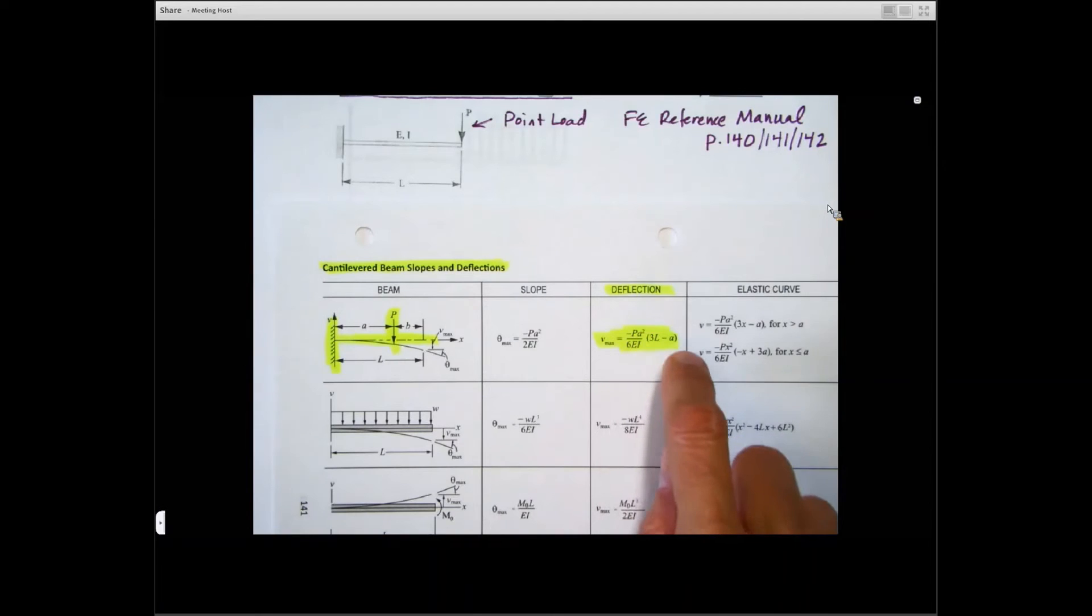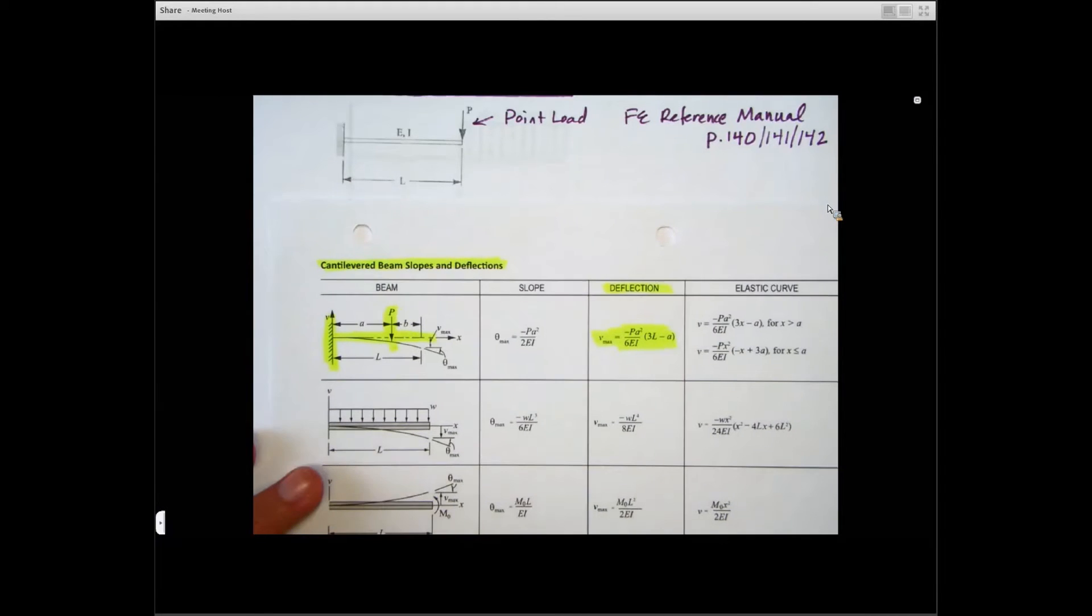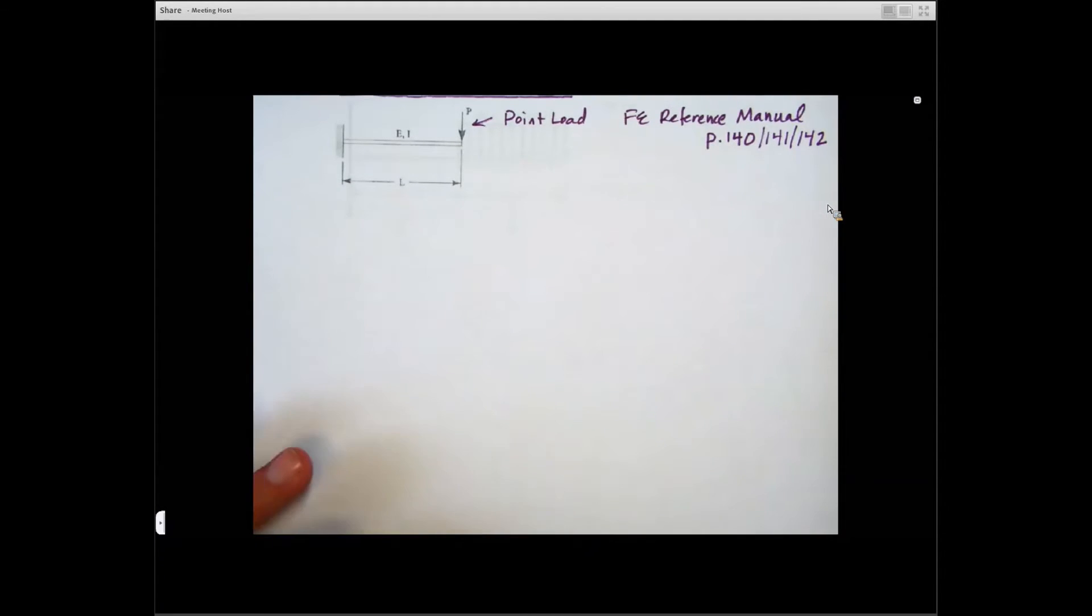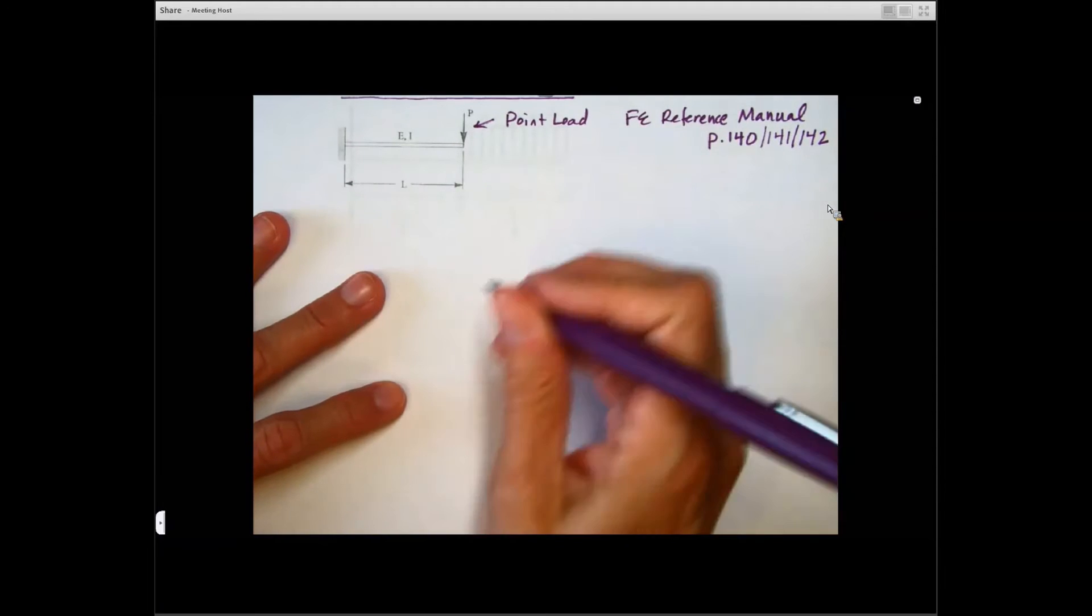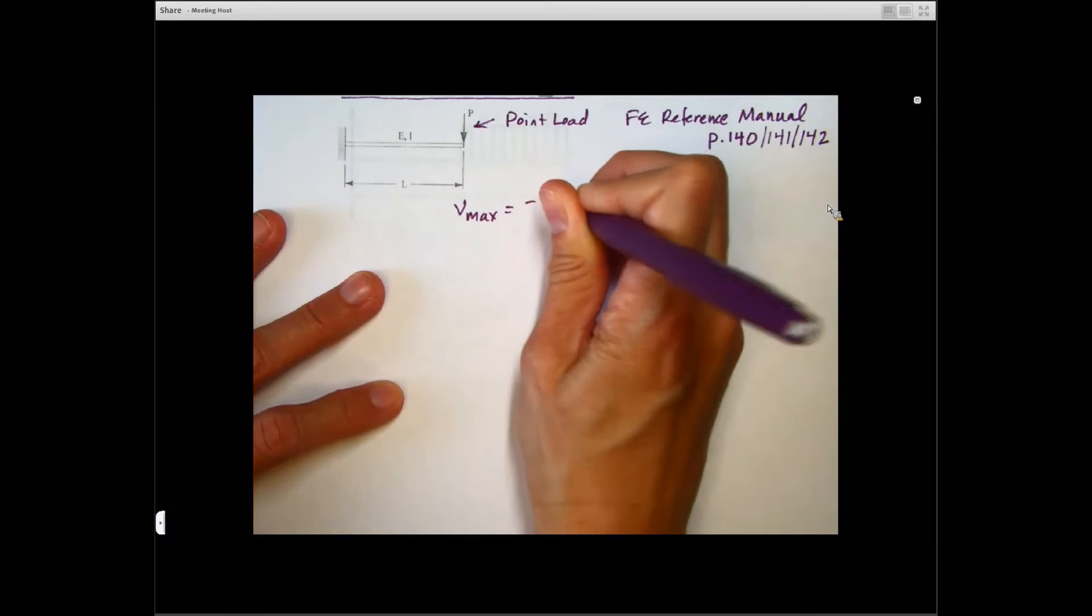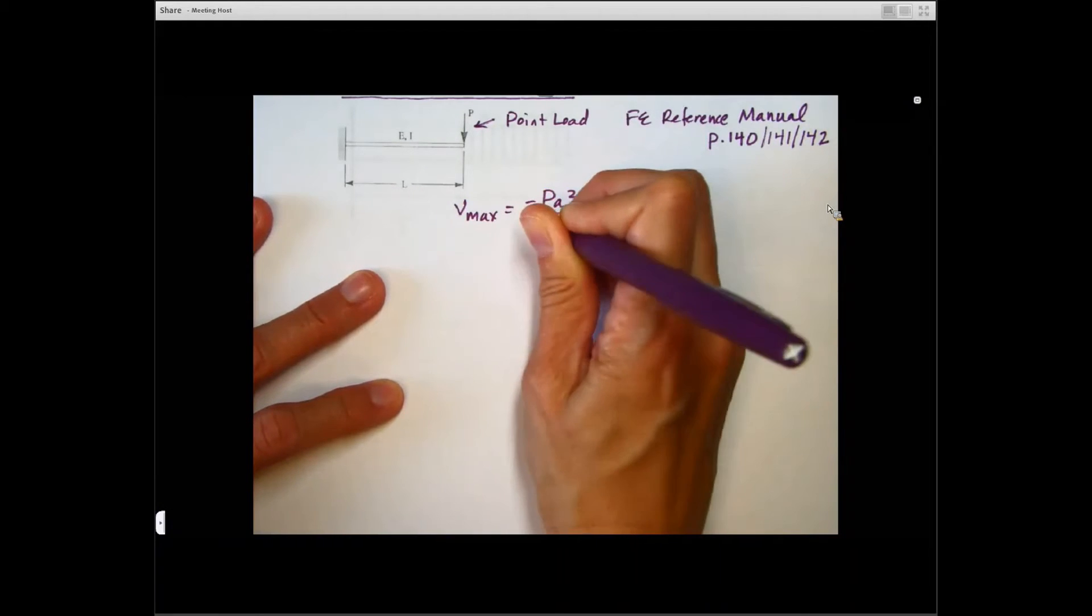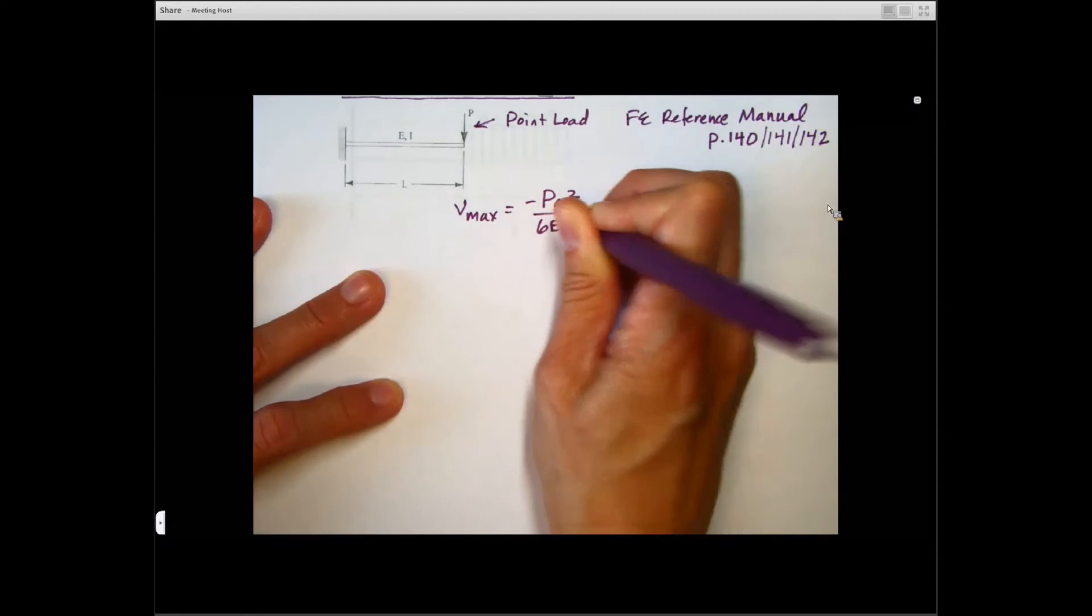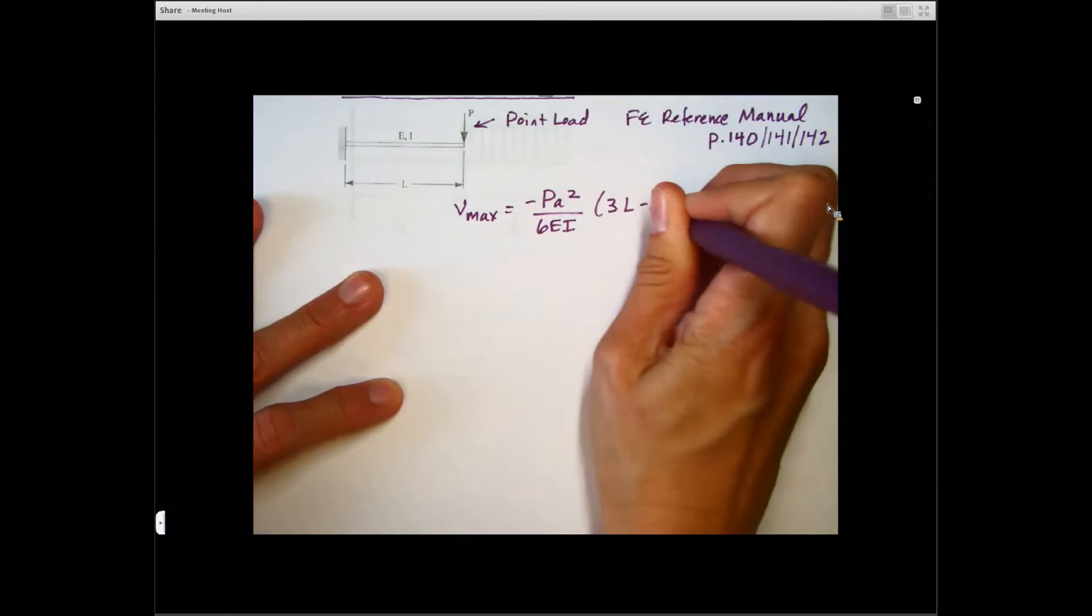So we're going to go ahead and use that formula for deflection. Pull that right off of there, that the maximum deflection is going to be minus PA squared over 6EI times 3L minus A. So I'm going to go ahead and write that down to start with.